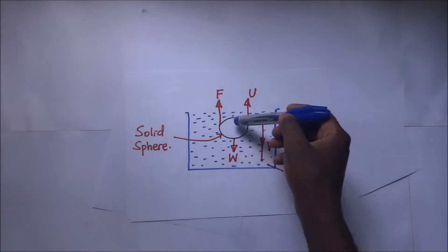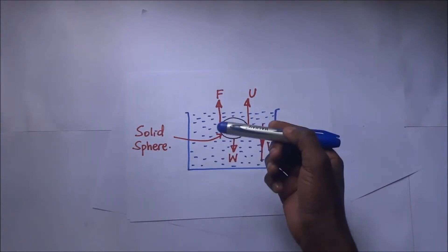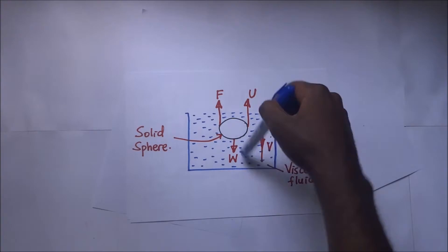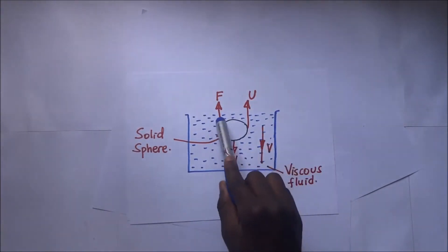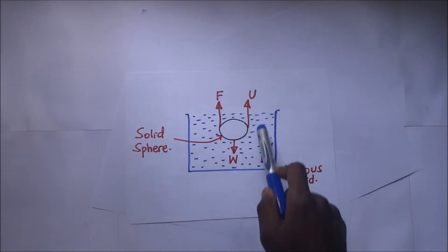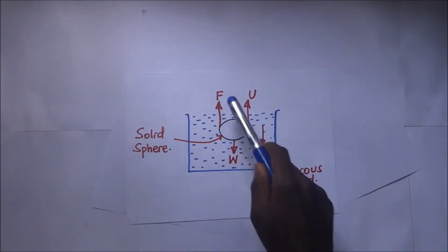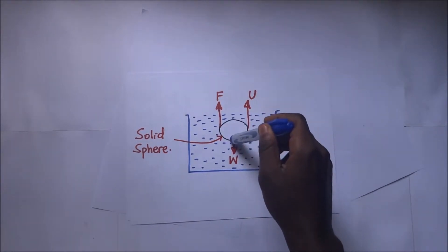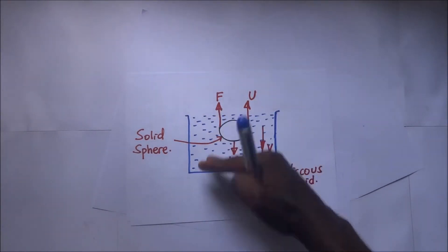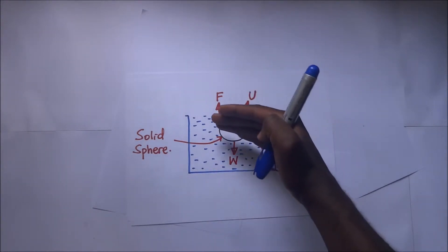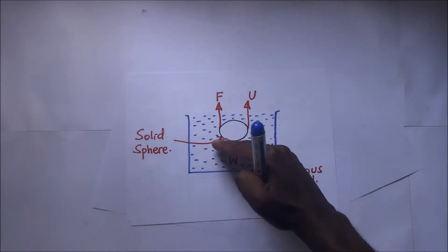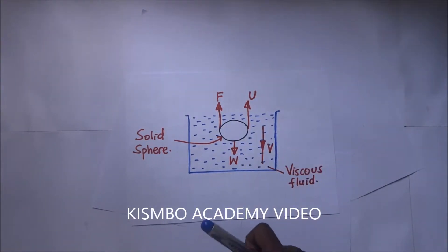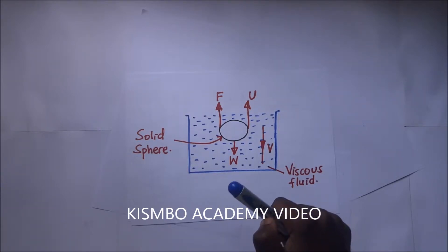This equalization happens because as the sphere continues to go down, the viscous drag keeps increasing. According to Stokes' law, as the velocity of the sphere keeps increasing, the viscous drag also keeps increasing, since viscous drag F and velocity are directly proportional. Eventually, the downward forces equalize with the upward forces, and the sphere stops accelerating, starting to move at a certain constant velocity.